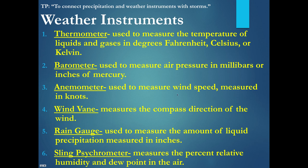You can see anemometers on top of houses — they're like cups that capture the wind and rotate around. The wind vane gives compass direction and can be found on top of many buildings. The rain gauge is used to collect liquid water. And the sling psychrometer, which I demonstrated in class, has two temperature gauges: one wet bulb and one dry bulb. That's used to measure relative humidity and dew point temperatures, and that exercise is on page 12 of the ESRT.